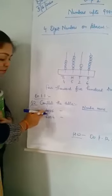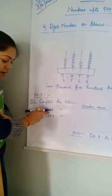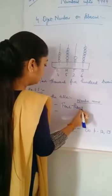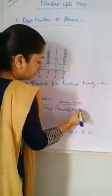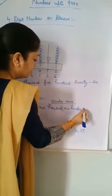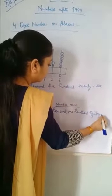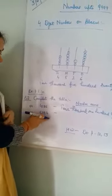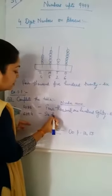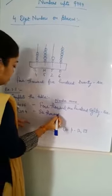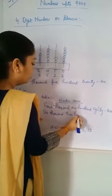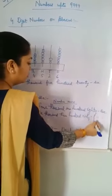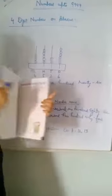Here, what is the number given? Four one eight six means four thousand one hundred eighty-six. So how will you write? Four thousand. Then six thousand three hundred ninety-four. Means six thousand three hundred ninety-four. Like this you will do this also.